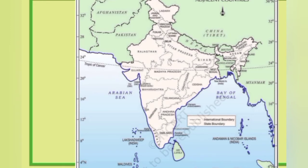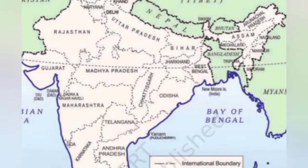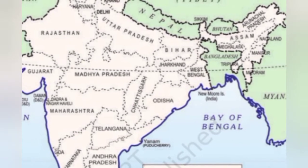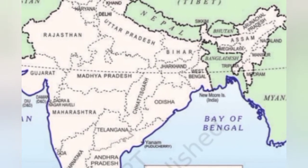The Tropic of Cancer, at 23.5° North, passes through India and almost divides it into two equal parts. It also passes through eight states: Gujarat, Rajasthan, Madhya Pradesh, Chhattisgarh, Jharkhand, West Bengal, Tripura, and Mizoram. You can zoom in and see which states this line passes through on the map.